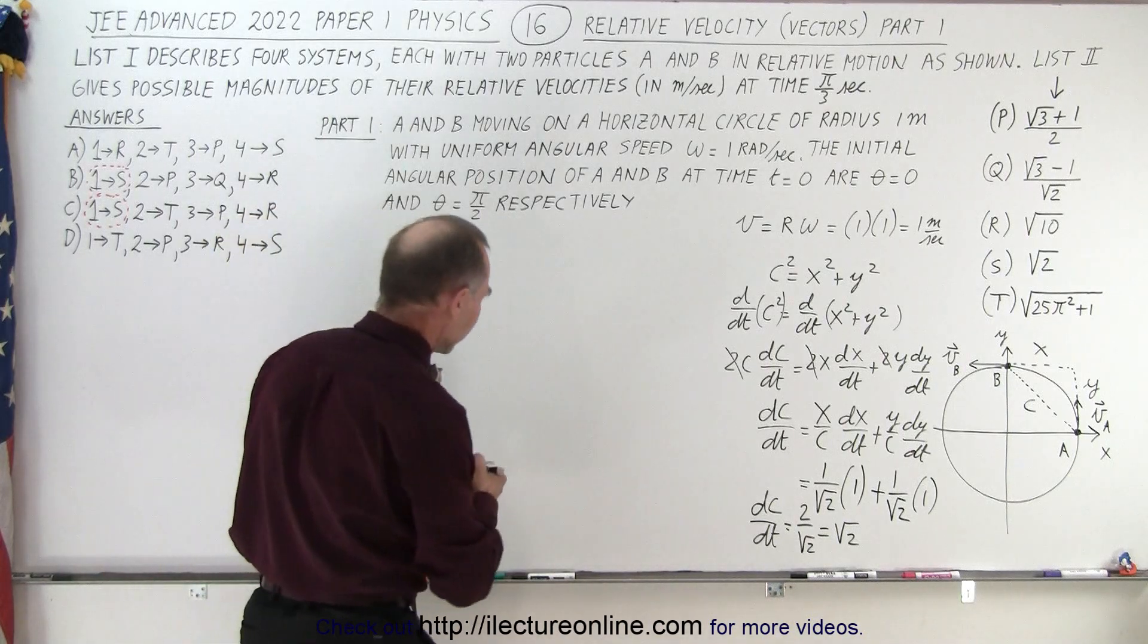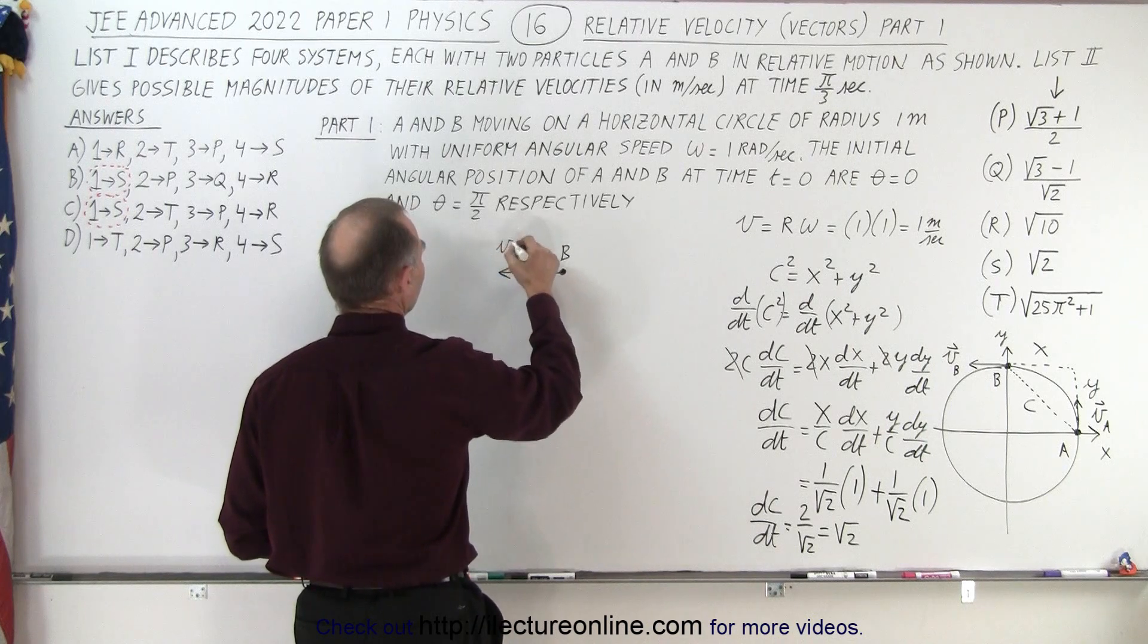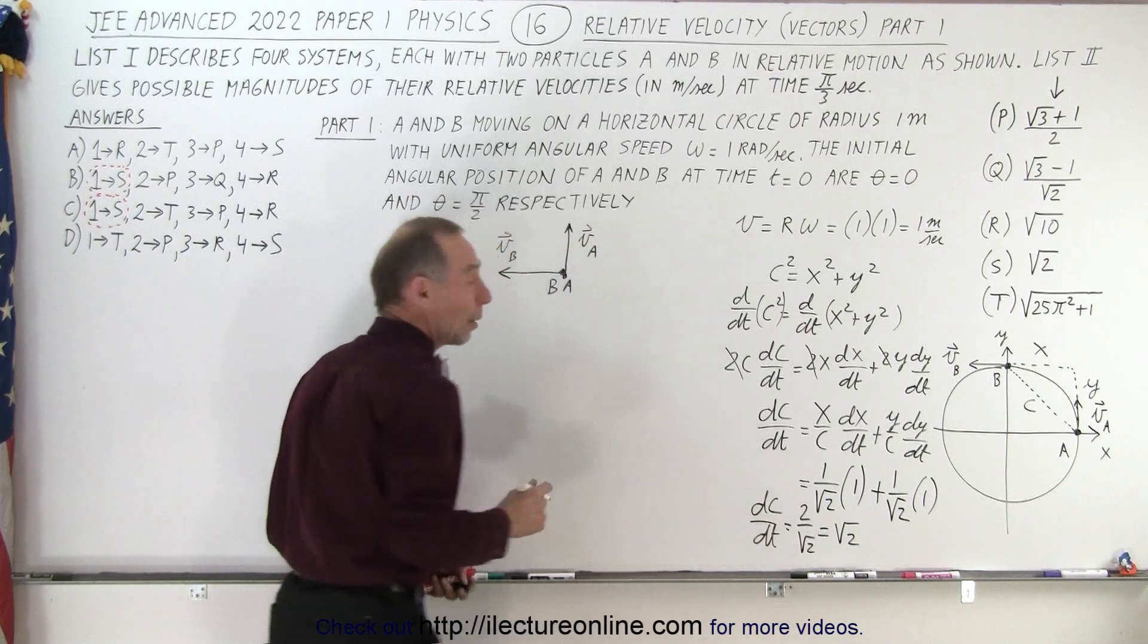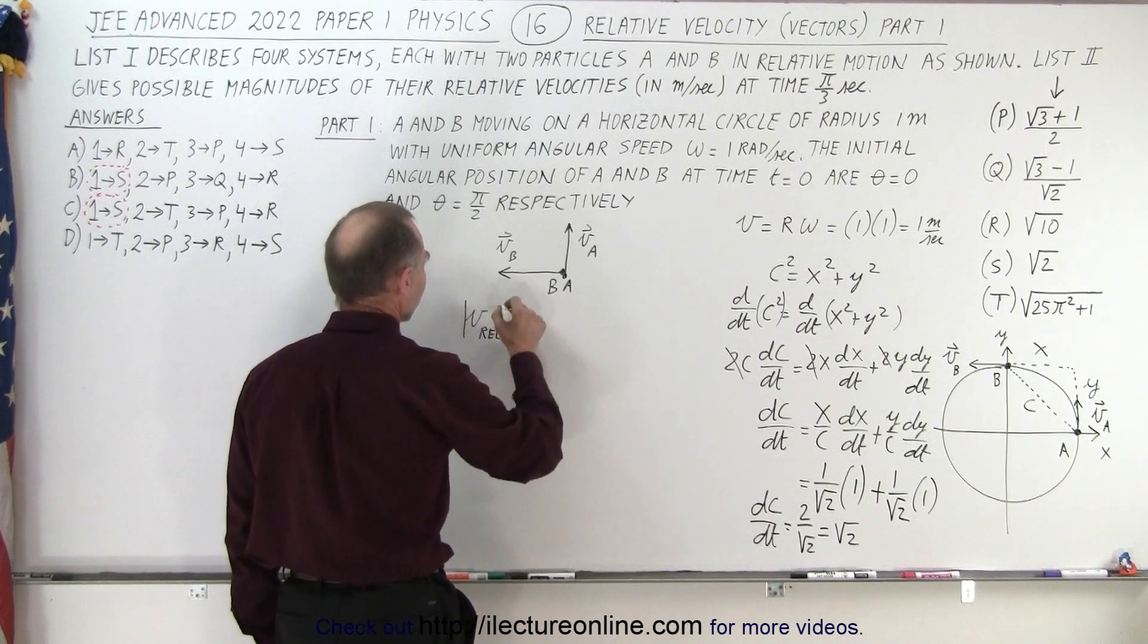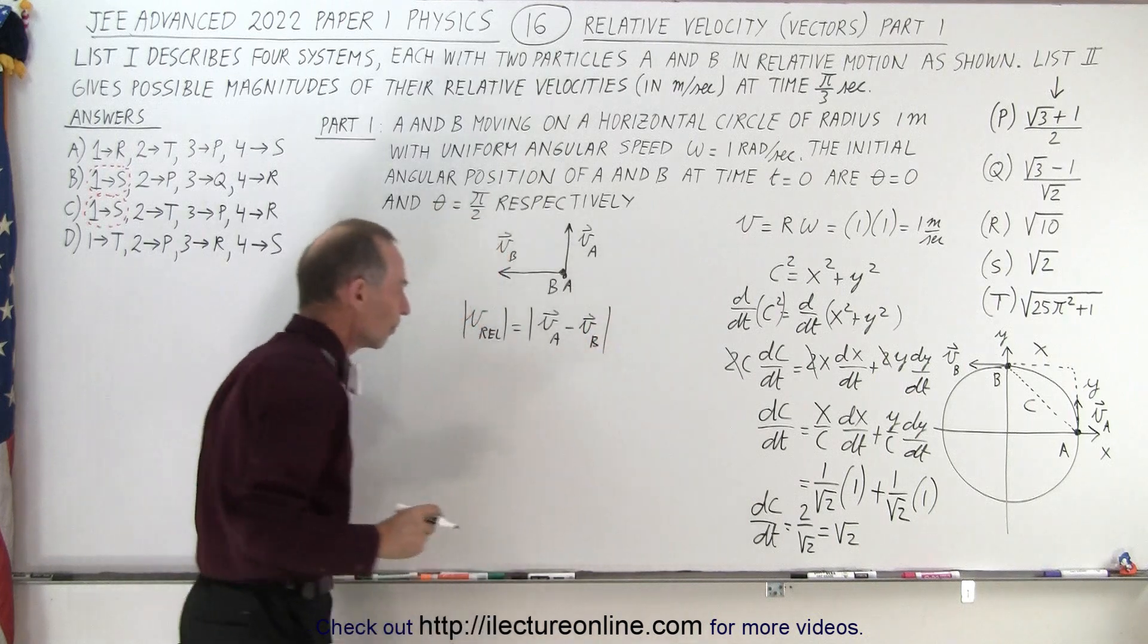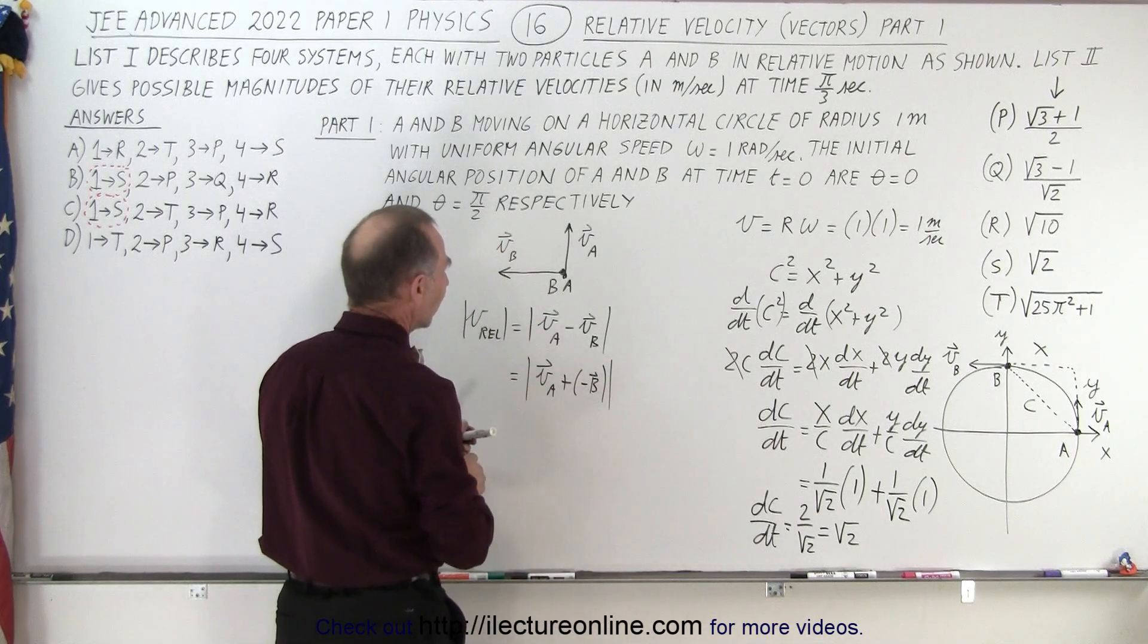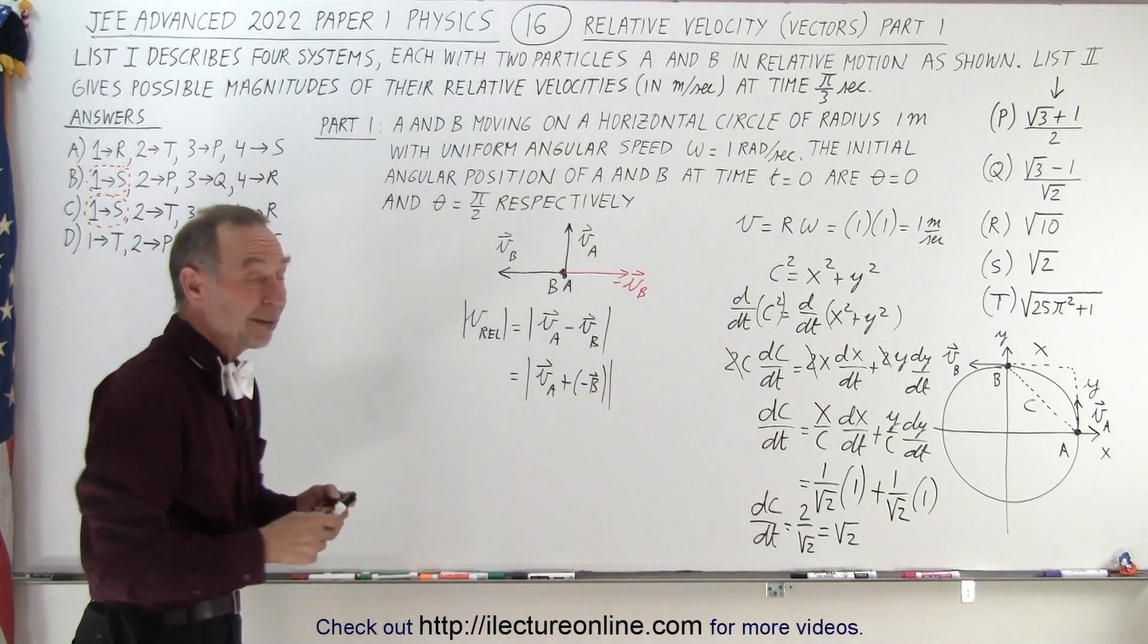What is the other method we could have used? We have B moving in this direction, this is V_B, and we have A moving in this direction, this is V_A. What we're trying to find is the magnitude of the difference between them. V_relative is equal to the magnitude of the difference between the two vectors. I'm going to subtract the two vectors, which means this equals the magnitude of V_A plus negative V_B. Negative V_B simply means V_B pointing in the opposite direction.